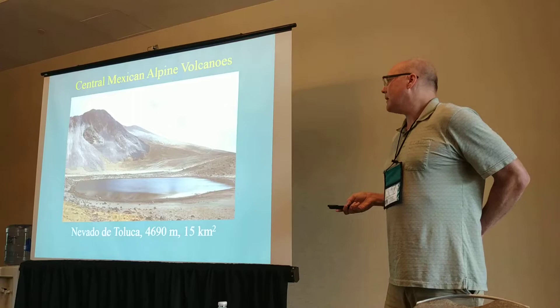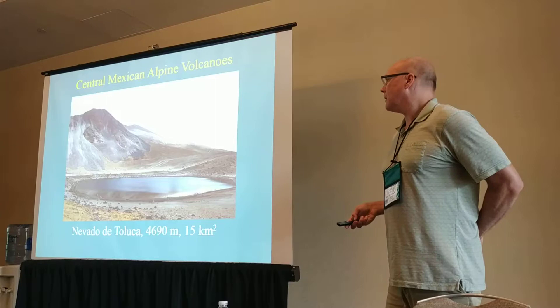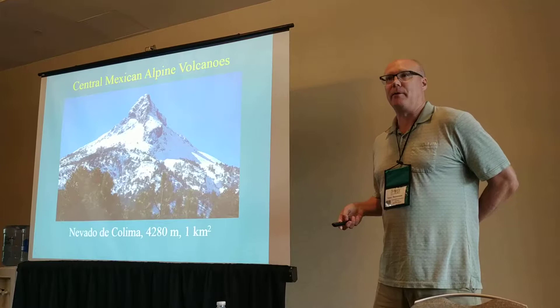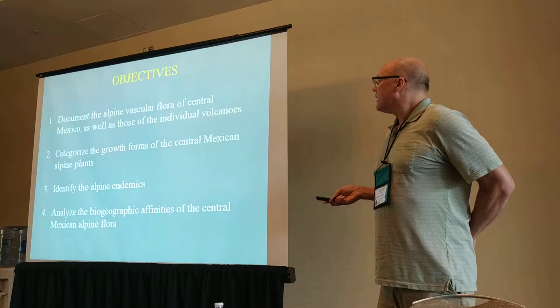The Nevada de Toluca is noteworthy because there are two freshwater lakes in the center of the crater, and it has about 15 square kilometers of alpine vegetation. But most of the alpine peaks are very limited in size — for example, one has just about a square kilometer on the very top. In total, it's only about 150 square kilometers of alpine vegetation throughout all these areas.